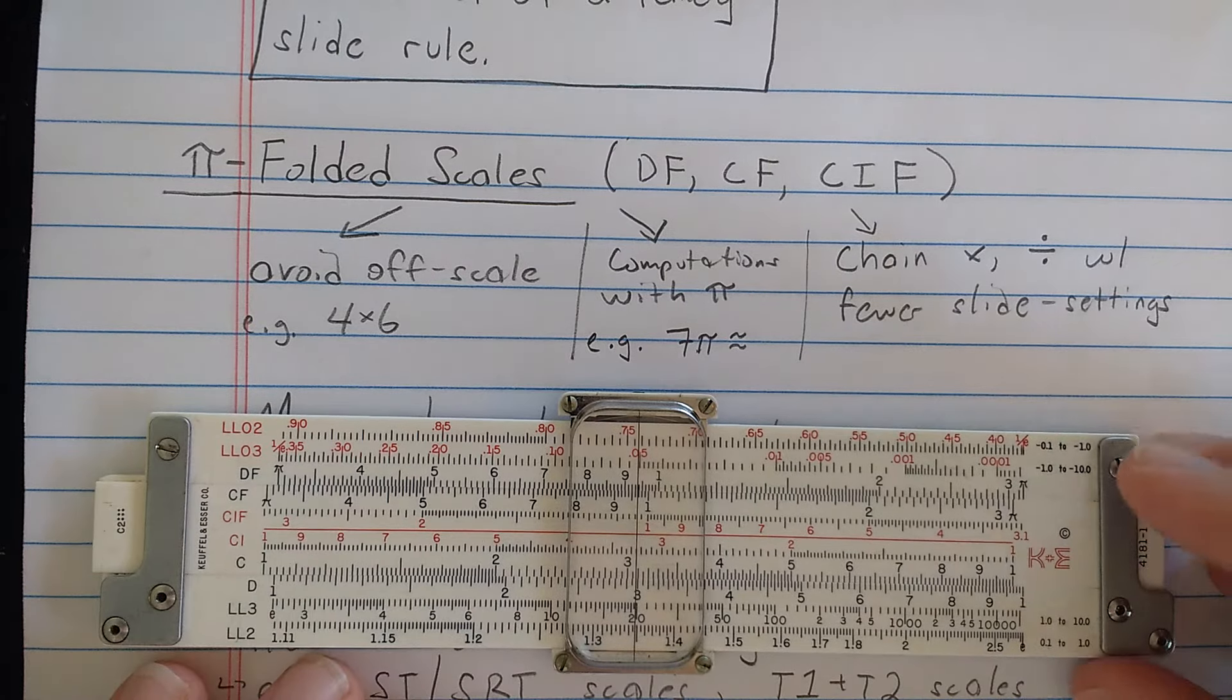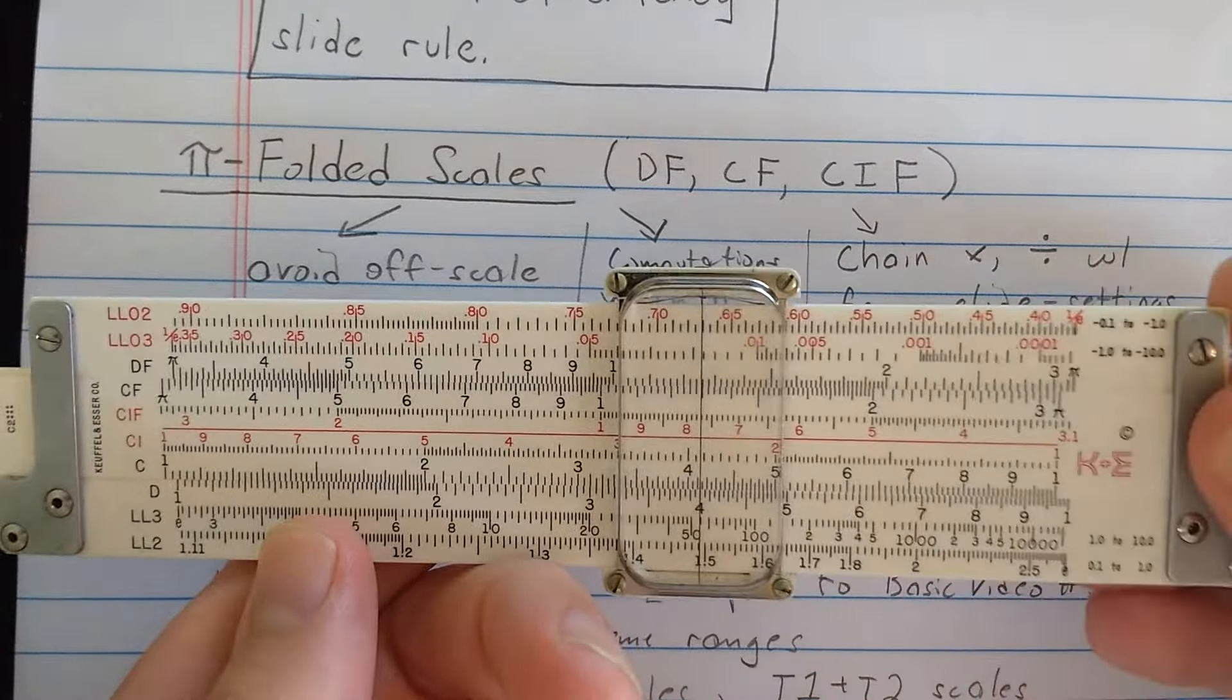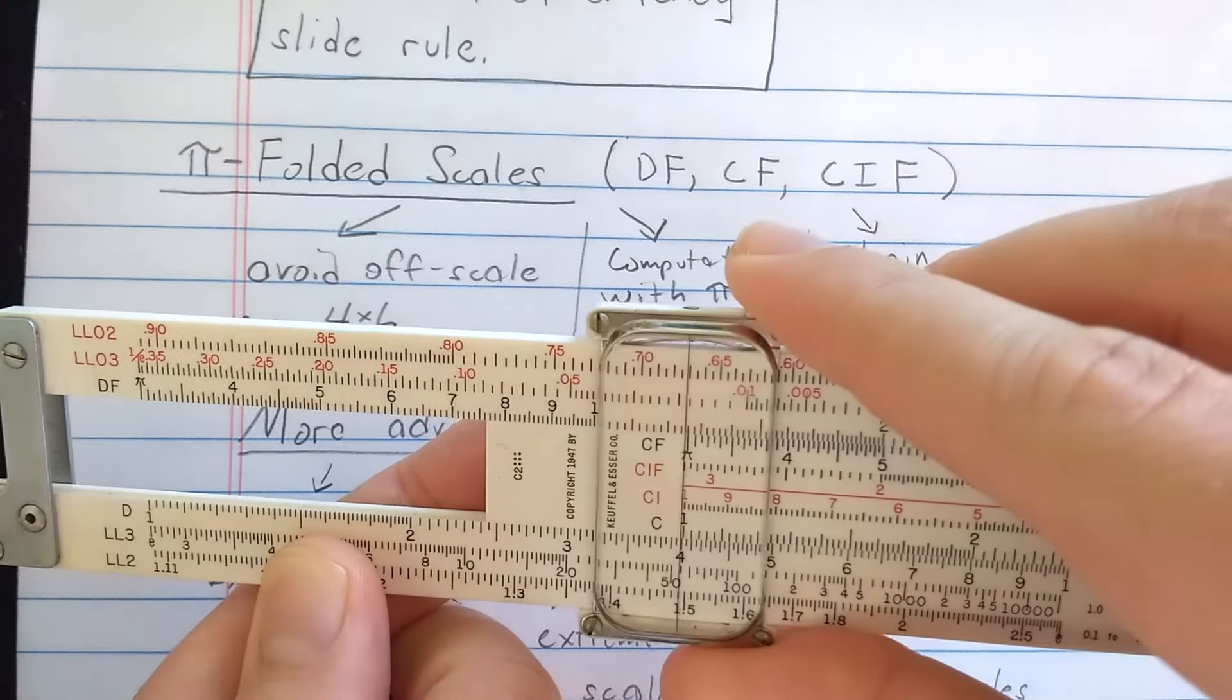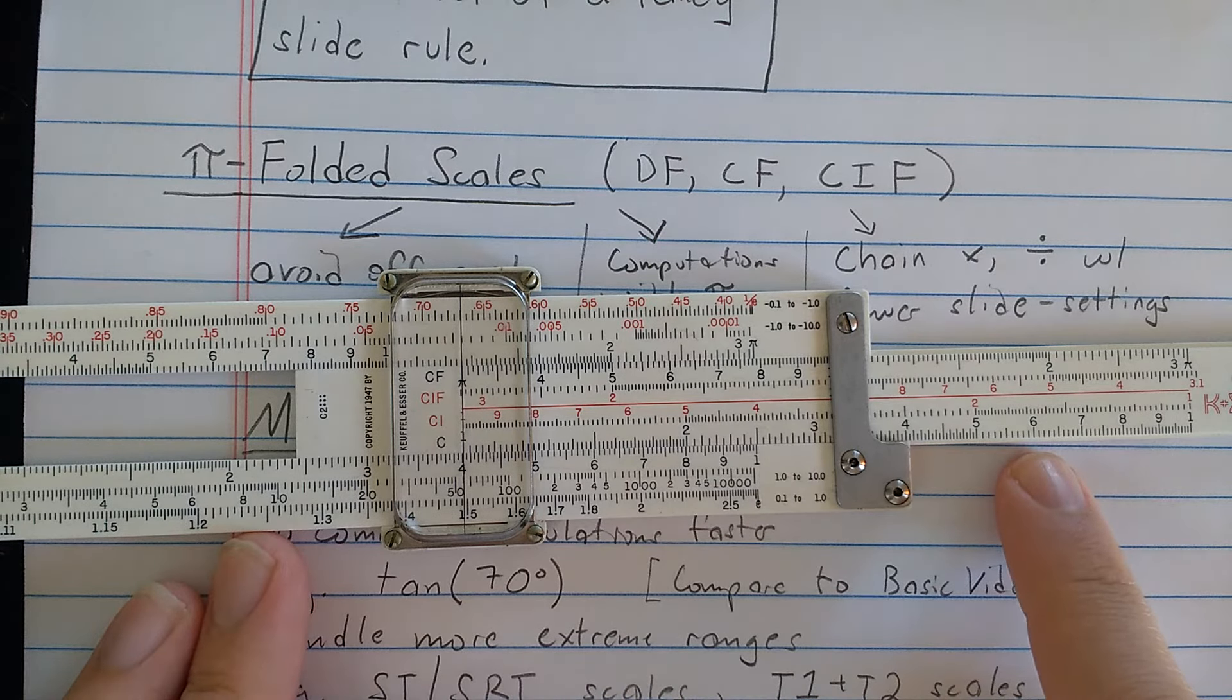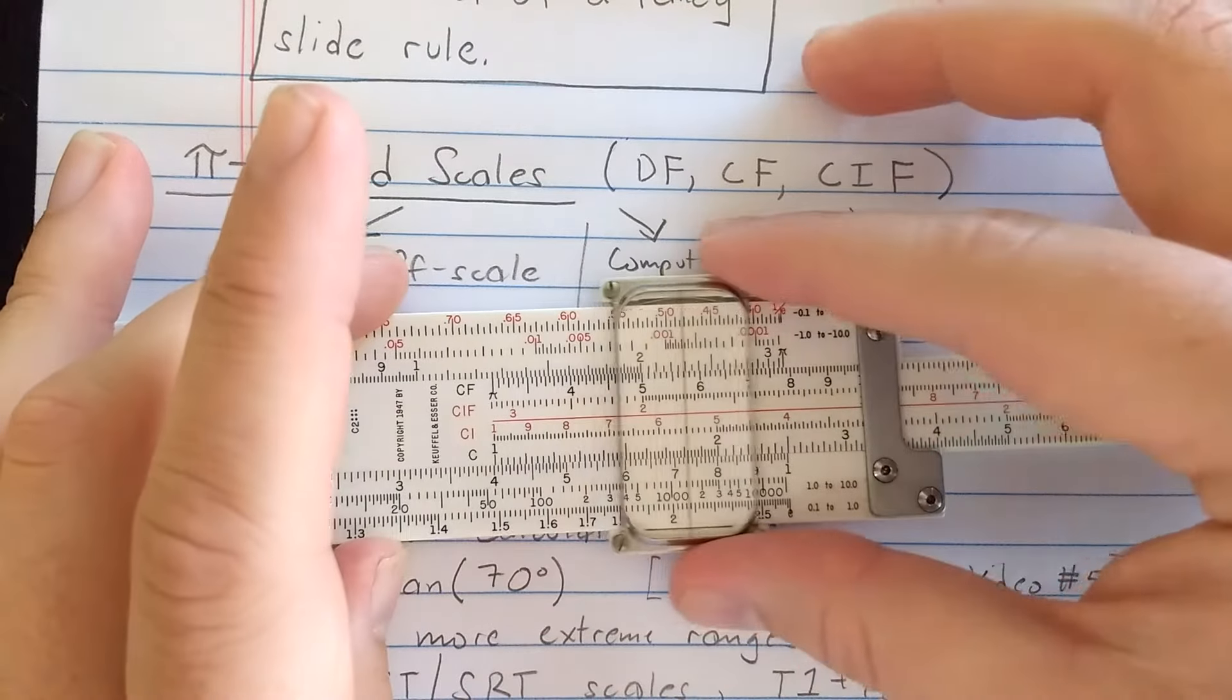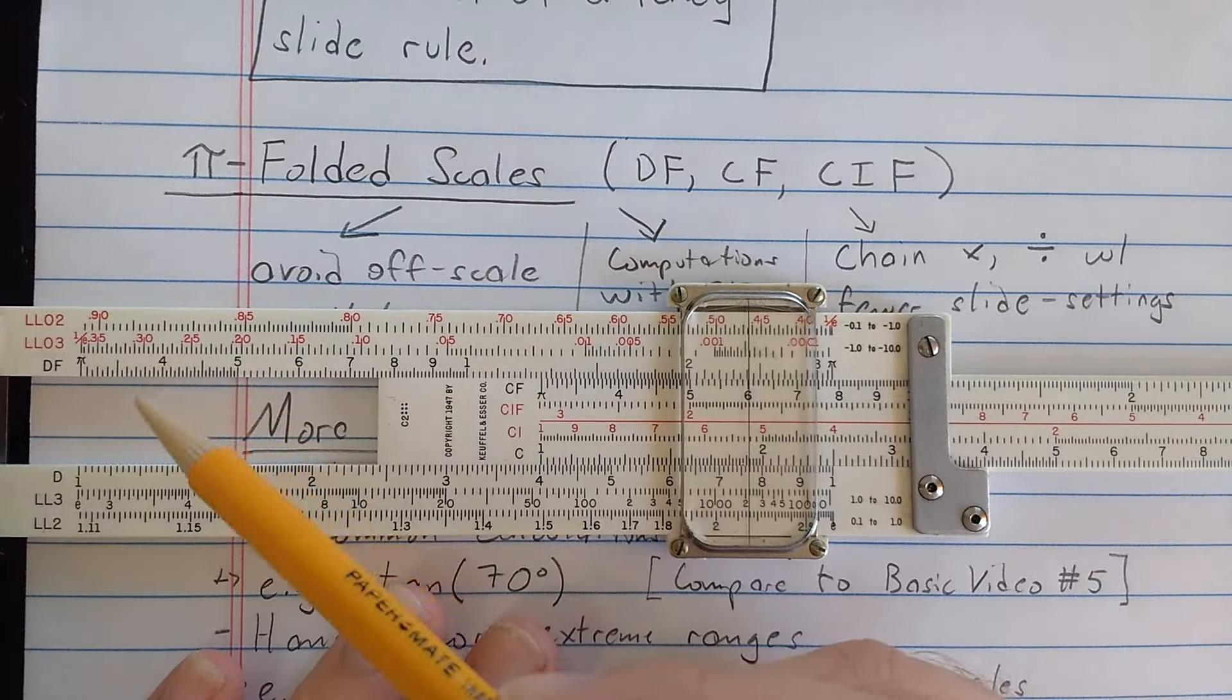Let me show you what they can be used for. So say I want to do our classic off-scale calculation which was 4 times 6. So here on the D scale I found the 4. And I'm going to try to do multiplication in the original method by finding the 1 and aligning it with the 4. Then we remember that the result is here off-scale where the 6 is reading on the C scale. Now, the magic of the folded scale is even though this 6 is off-scale, the 6 on the folded C scale is on-scale. So I'm going to move the cursor to the 6 on the folded C scale and read the result, 24, on the folded D scale.